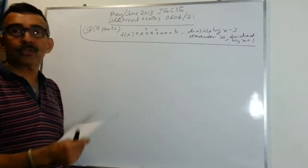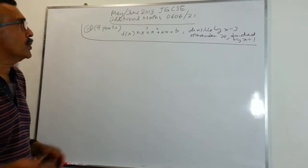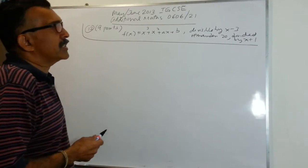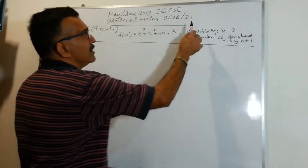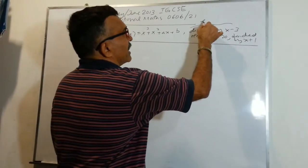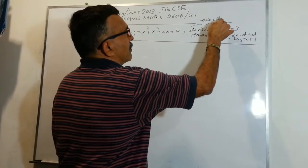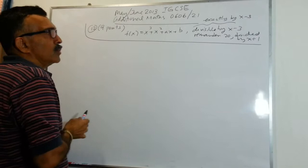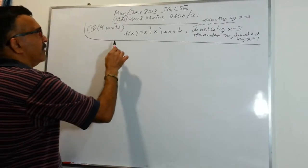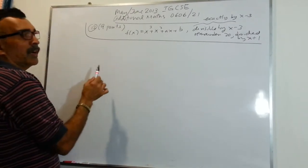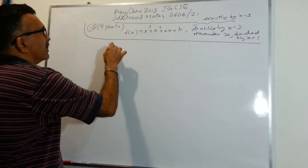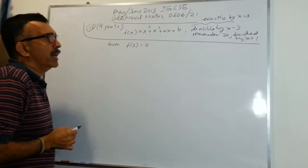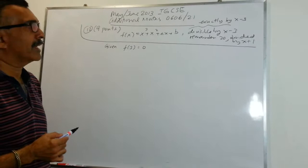First, let's find the values of a and b. Using the information given, it is divisible by x minus 3 — meaning it is exactly divisible. So we can use the factor theorem and remainder theorem. This means f(3) = 0.